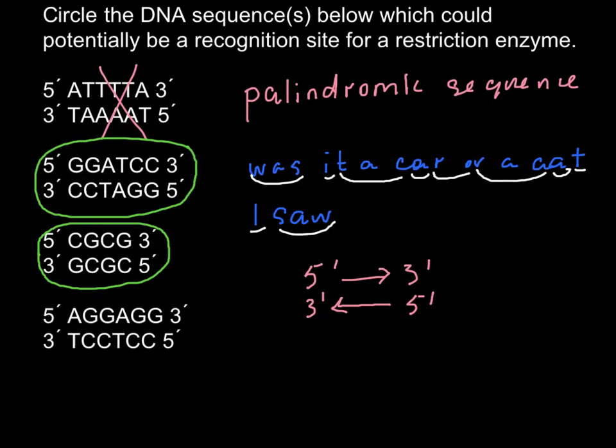And now we're left with the last example. And it starts from AG and on the second strand it starts with CC. So we even don't have to read the whole sequence. We already see that this is not palindromic sequence. And we can cross it out also.